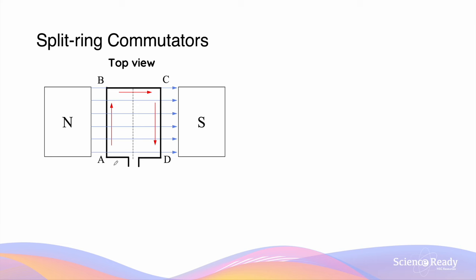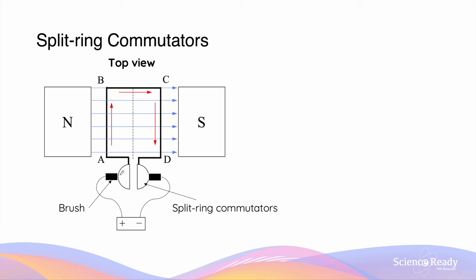This is where we introduce a very important component of all DC motors — split ring commutators. Split ring commutators are two semi-circular or curved components attached to the end of the armature.